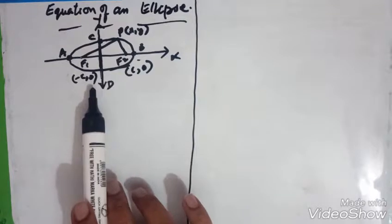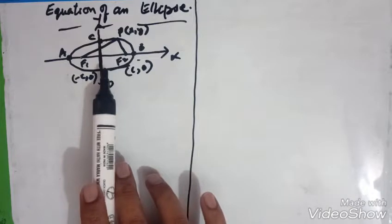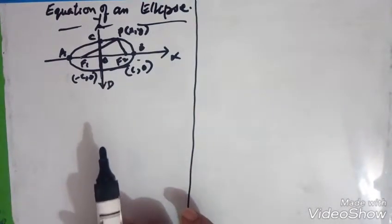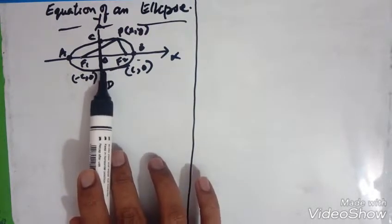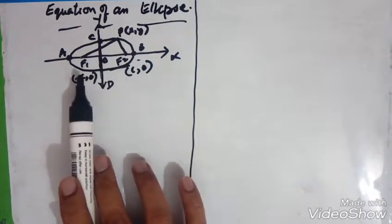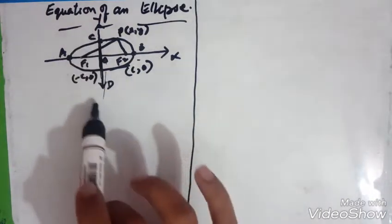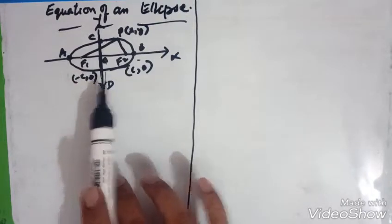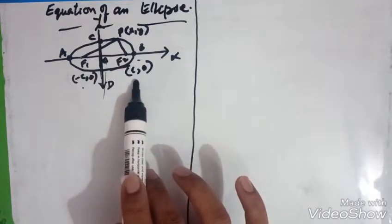Let F1 and F2 be the foci, and O be the midpoint of the line segment F1F2. Let O be the origin, the line from O through F2 be the positive x-axis, and through F1 be the negative x-axis. Let the line through O perpendicular to the x-axis be the y-axis. Let the coordinates of F1 be (−C, 0) and F2 be (+C, 0).